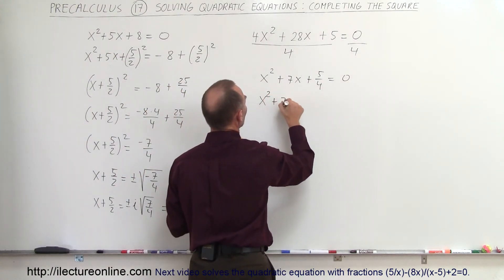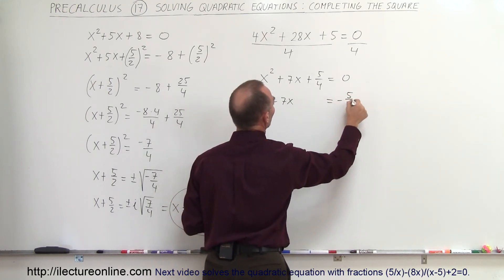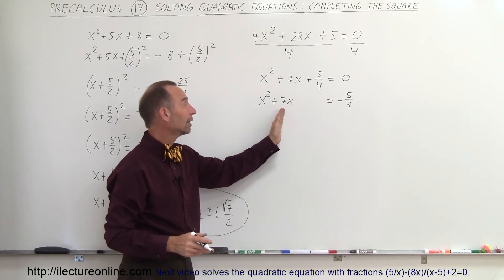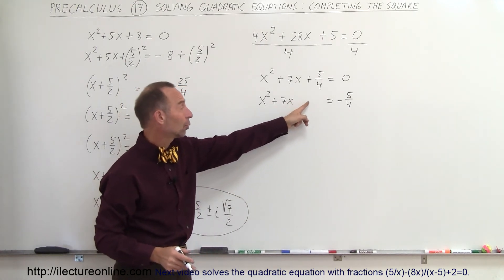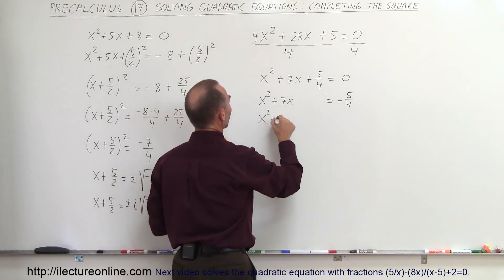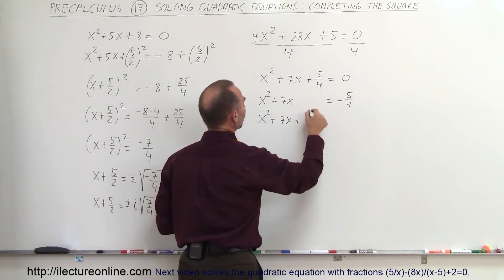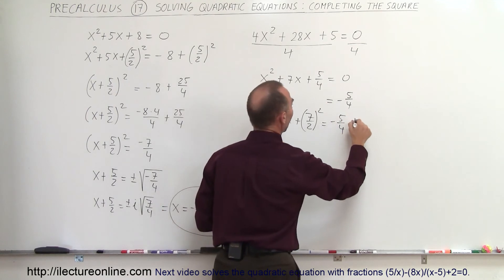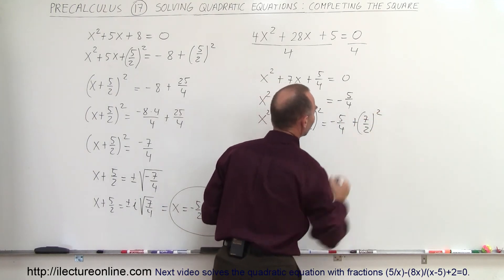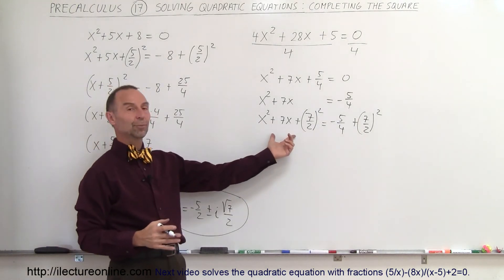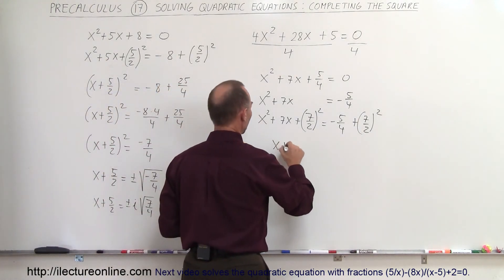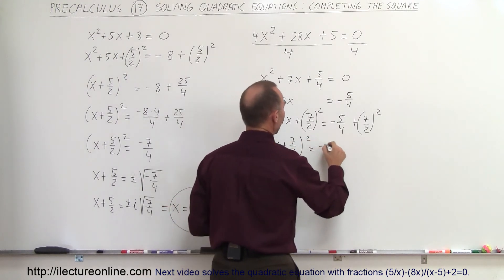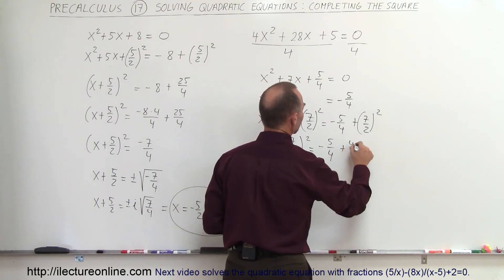And now we do the same thing as before. We move the constant term to the right side, giving us x² + 7x = -5/4. The next step is to complete the square on the left side — we take half the coefficient of the middle term and square it. So we add (7/2)² to both sides, giving us x² + 7x + (7/2)² = -5/4 + (7/2)².